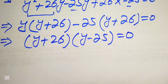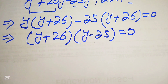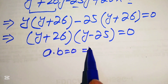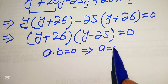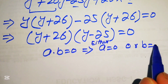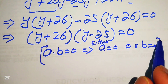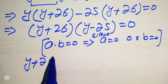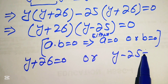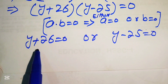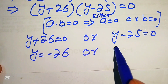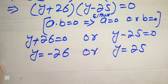Since (y plus 26) is a common factor, we factor it out to get (y plus 26)(y minus 25) equals 0. Applying the zero product property — if a times b equals 0 then a equals 0 or b equals 0 — we get y plus 26 equals 0 or y minus 25 equals 0, giving y equals minus 26 or y equals 25.